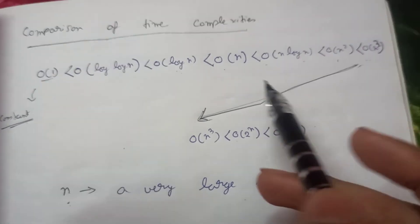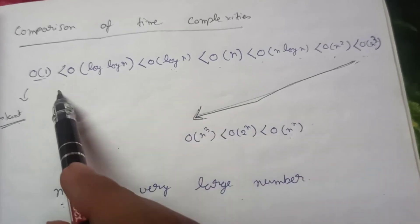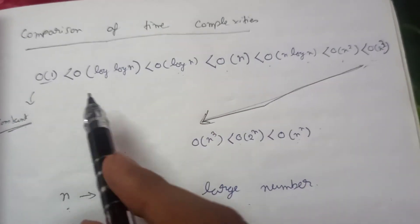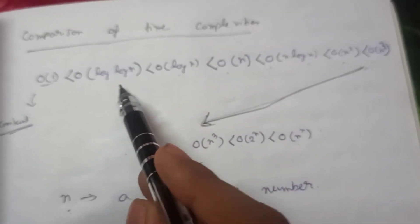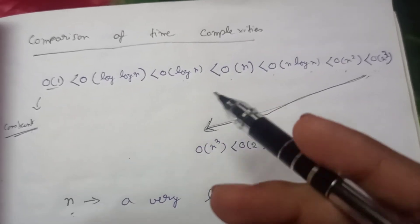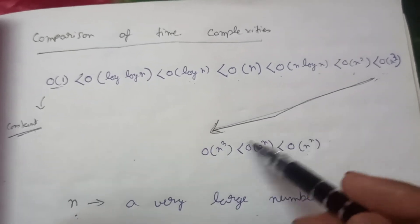Suppose the number is 10 to the power of 5. Calculate the value of all of this and you can see yourself that the order is holding. So it may or may not hold for small values, but it will always be true. This order is always true for huge numbers. And that's what we do - we calculate time complexity for large numbers. So that is the order, you must remember it.